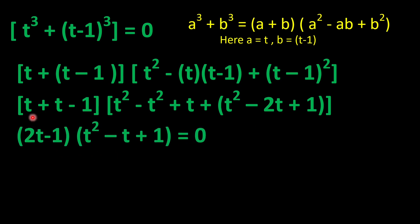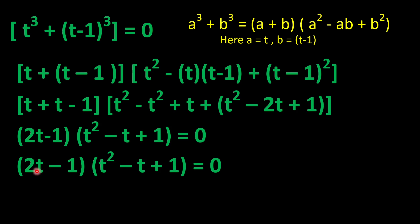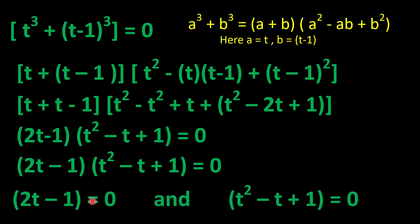Simplifying: t^2 - t^2 cancels, leaving t^2 - t + 1 in the bracket. So the equation factors as (2t - 1)(t^2 - t + 1) = 0. Setting each factor to zero: 2t - 1 = 0 and t^2 - t + 1 = 0.